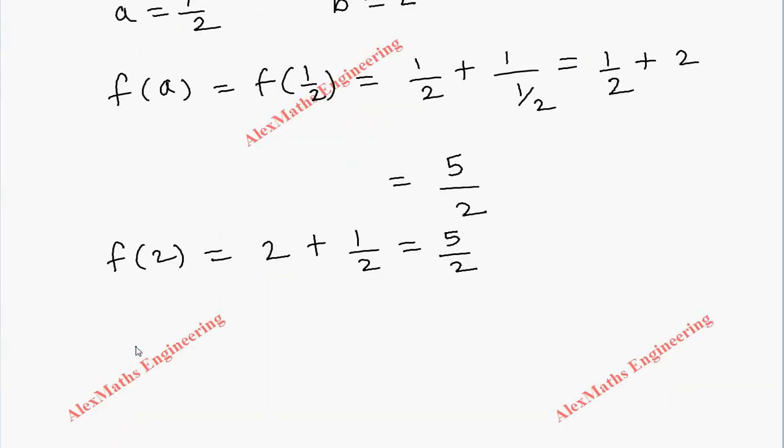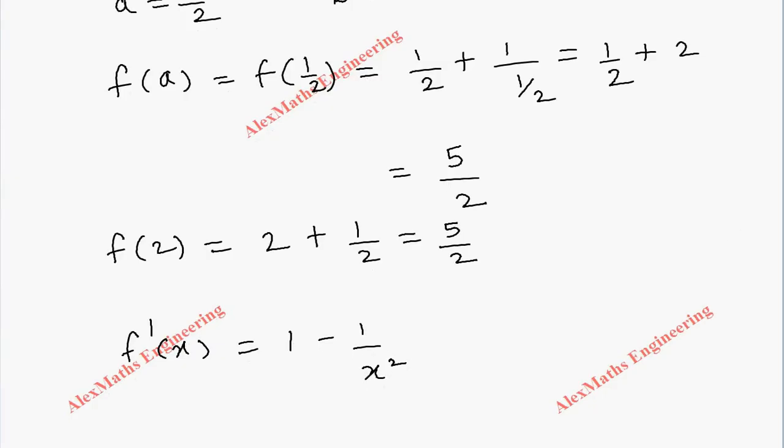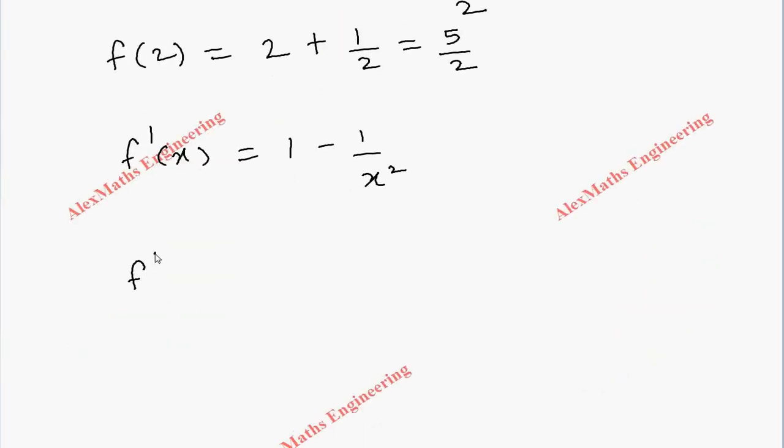Then we have to find f'(x). The differentiation of x is 1, and 1/x is -1/x². We will change in terms of c: f'(c) = 1 - 1/c².